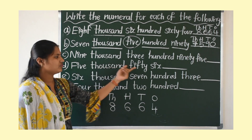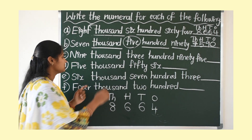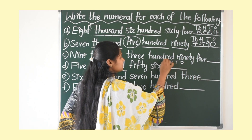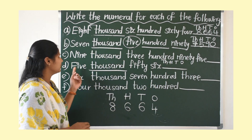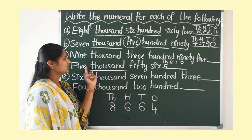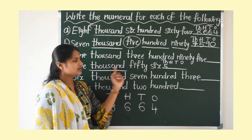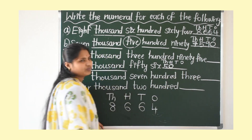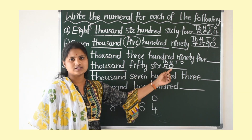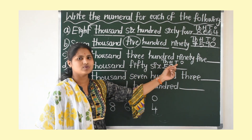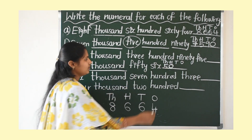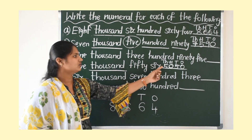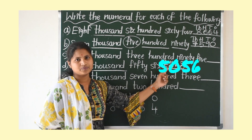Next: five thousand and fifty-six. Here also started with 1000, so write 1's place, 10's place, 100's place, and 1000's place. How many 1000's? 5000. Is there any 100's? No, there are no 100's, so write 0 in the 100's place. 50 means how many 10's make 50? 5 tens make 50 — write 5 in the 10's place. No 1's, so write 0. Answer: 5056.